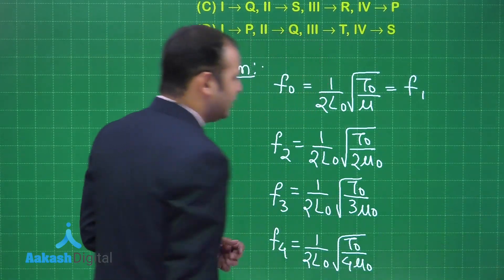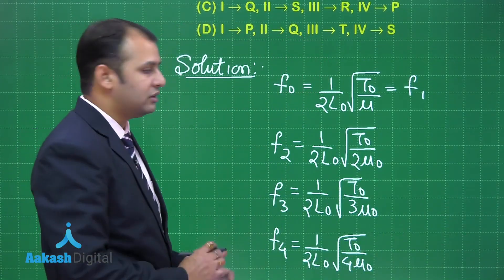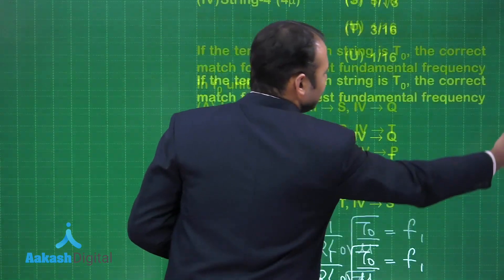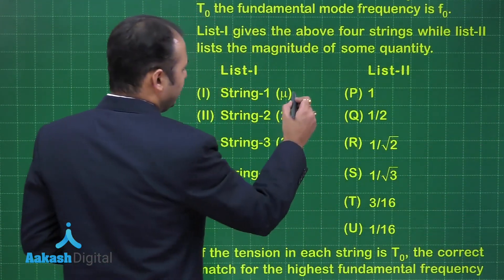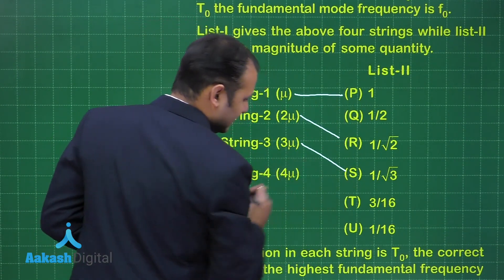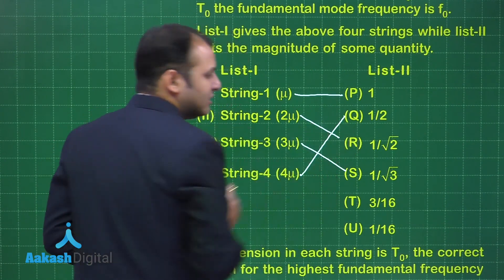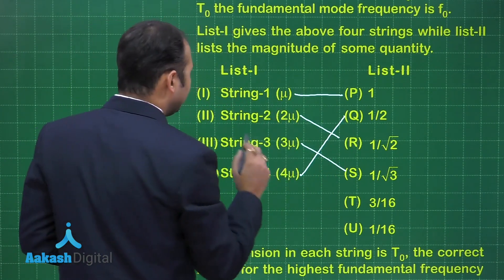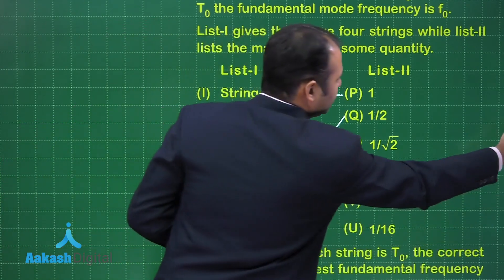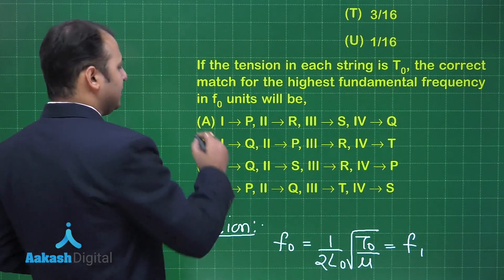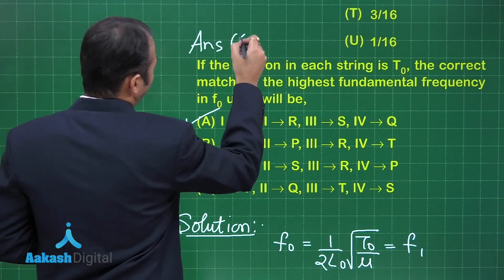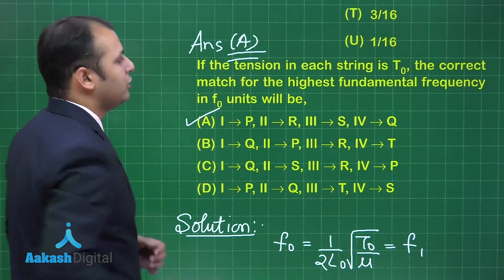The highest of these frequencies for the four wires will be at length L0 only — the minimum length possible. With this combination, the relations can be easily mapped: string 1 to P, string 2 to R, string 3 to S, and string 4 to Q. As you can see, option A is the correct answer to this question.